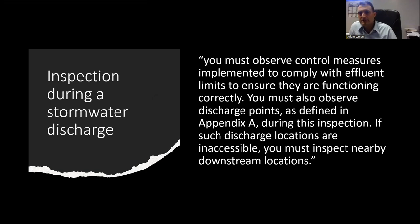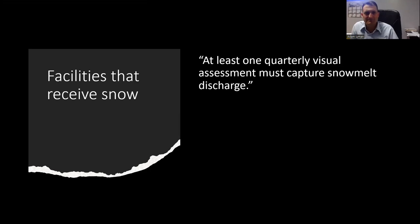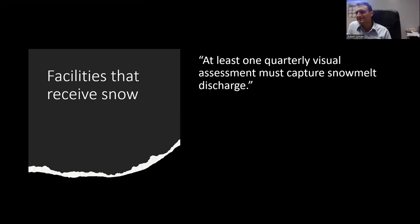During a stormwater discharge, you must observe control measures implemented to comply with permit limits and observe discharge points. If discharge locations are inaccessible, you have to inspect nearby downstream locations. Any facility that receives snow must have at least one quarterly visual assessment that captures snowmelt discharge — so in the springtime when the snow is melting, you need to do at least one inspection during a snowmelt event.